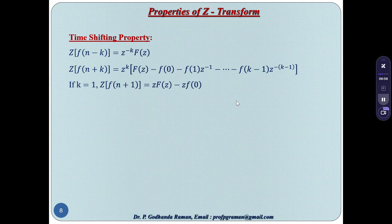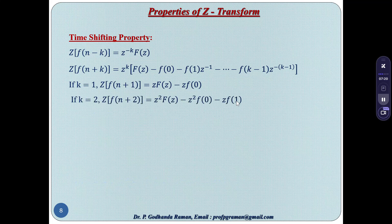Time shifting property: Z{f(n−k)} = z^(−k)·F(z). Z{f(n+k)} = z^k·F(z) − f(0)·z^k − f(1)·z^(k−1) − ... − f(k−1)·z. When k=1: Z{f(n+1)} = z·F(z) − z·f(0). When k=2: Z{f(n+2)} = z²·F(z) − z²·f(0) − z·f(1).